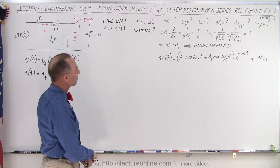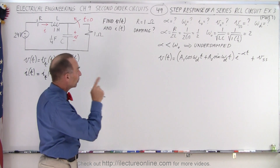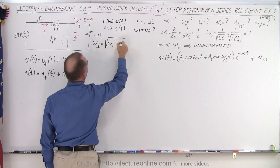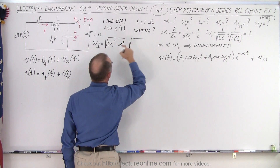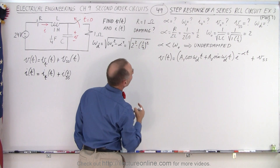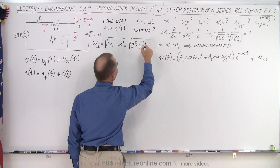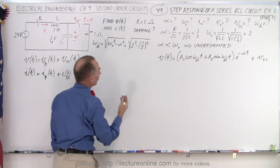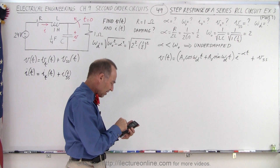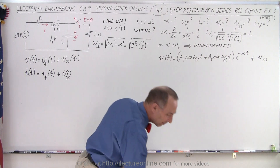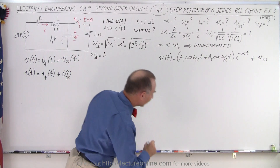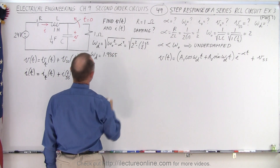We already found alpha equals one half. The damped frequency equals the square root of the natural frequency squared minus alpha squared. That's the square root of 2 squared minus one half squared, which is the square root of 4 minus one quarter, giving 3.75. Taking the square root with a calculator: the square root of 3.75 equals 1.9365. So the damped frequency is 1.9365 rad/s — slightly less than the natural frequency, because the resistor is quite small.